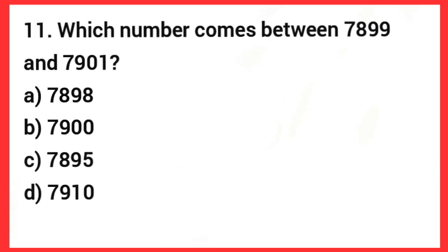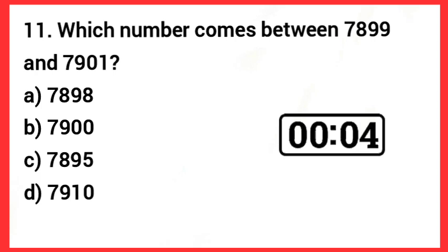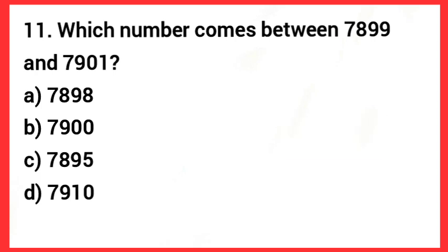Next one: Which number comes between 7,899 and 7,901? Answer: Option B — 7,900.